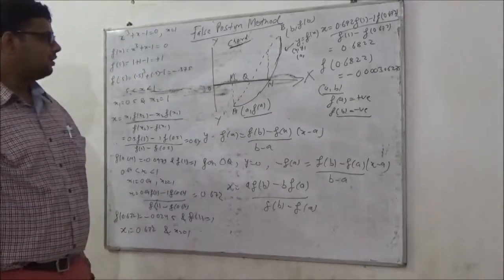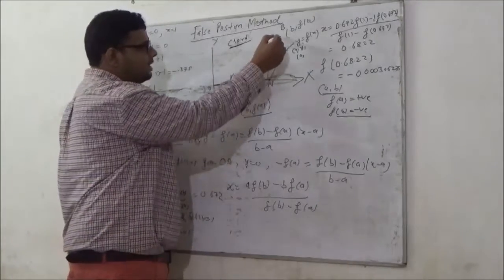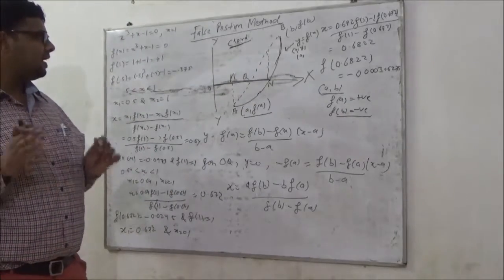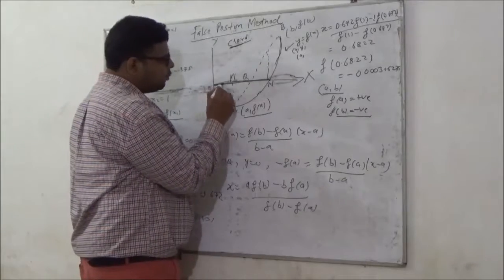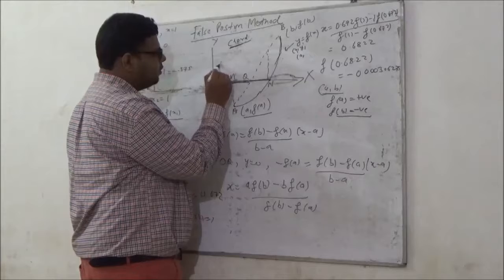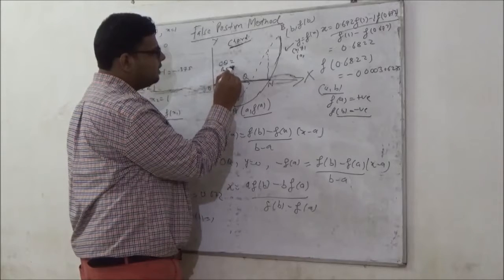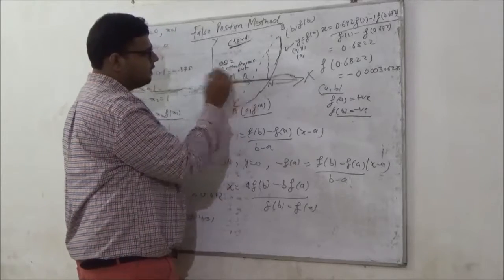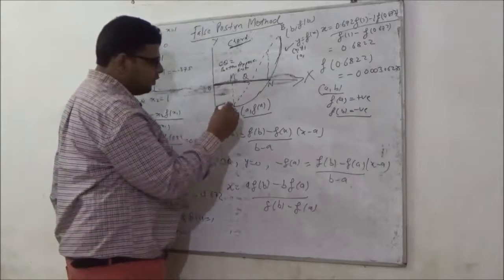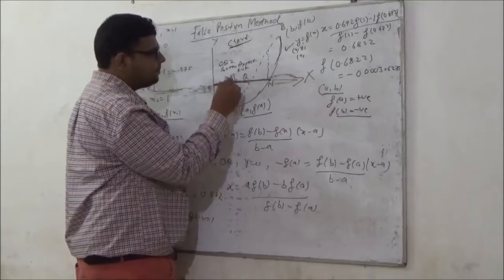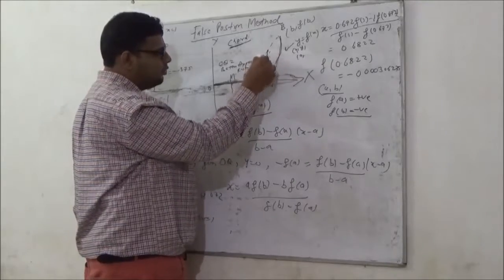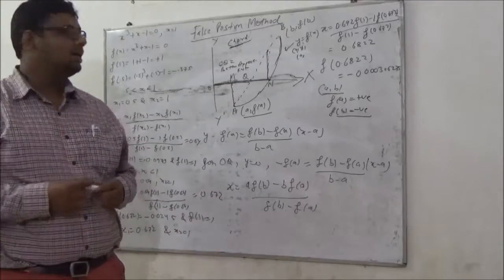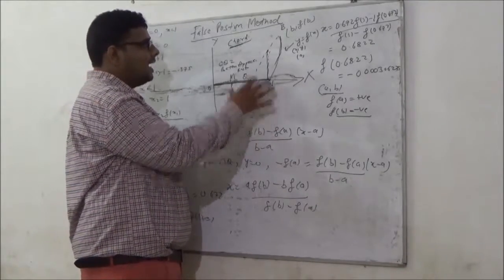You join the chord from a to b. The chord intersects the x-axis at point Q, and OQ will be my better approximate root. You can also draw perpendiculars from extremity a to point M, and from a point between Q and b to point N. Now you have to find the equation of the chord, which is a straight line, given two extremity points a and b.